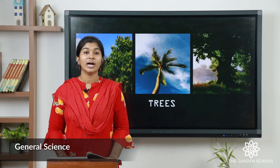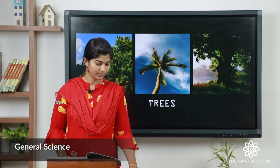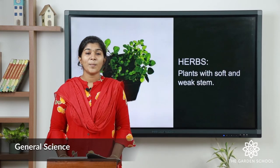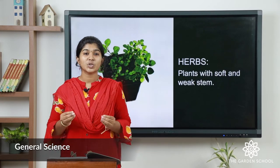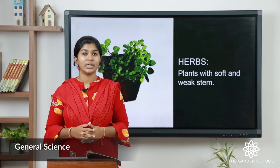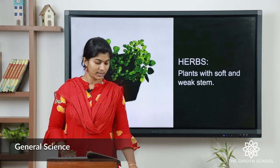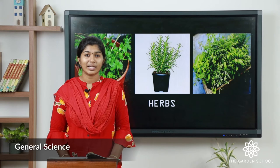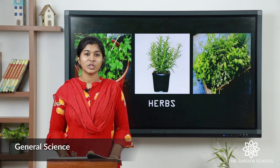The second one is called herbs. Plants with soft and weak stems are called herbs. For example, the coriander plant, the rosemary plant, etc.